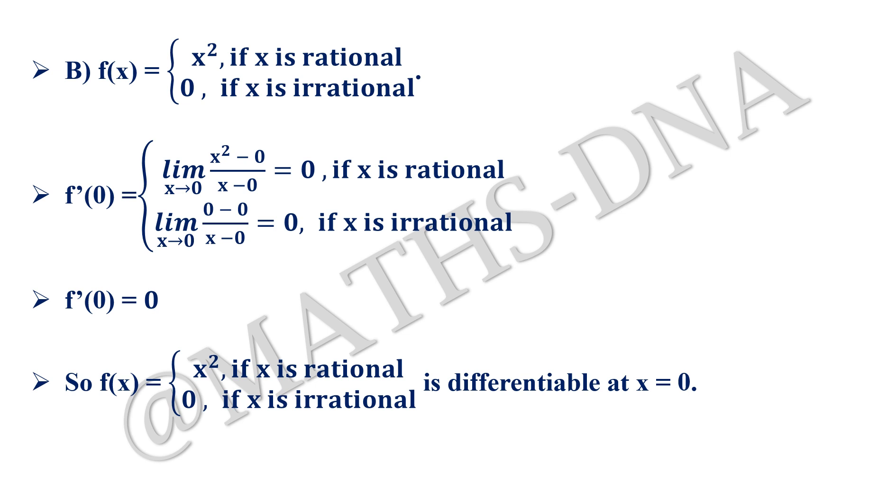Thus the limit exists and so f(x) equals x square if x is rational and 0 if x is irrational is also differentiable at x equals 0. So a is also correct, b is also correct, and thus option c, that both a and b are correct, is the correct answer.